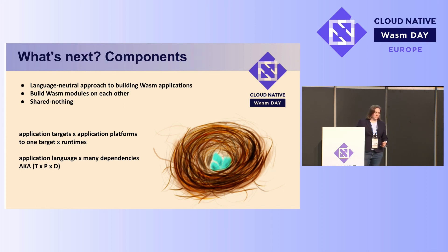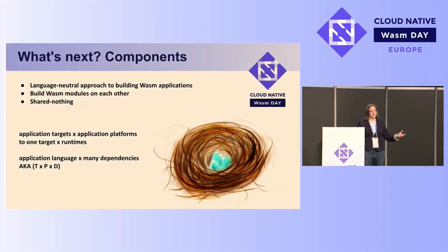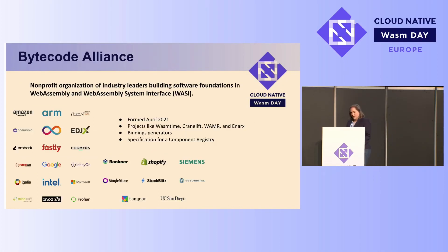Something like the component model can really mix things up and change things for the better. Before, I was talking about this giant matrix of applications by operating systems and targets — now just having one single compilation target. But imagine I've really exploded that sandbox, because now if things support the component model, we can get to the point where we have access to millions of different tools. If that excites you, I recommend pushing your company to join the Bytecode Alliance — it's pushing that proposal and many others forward.